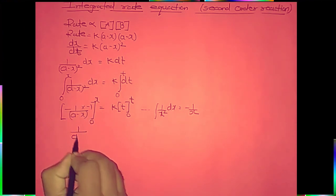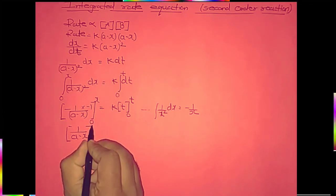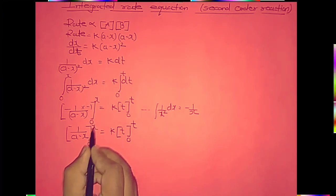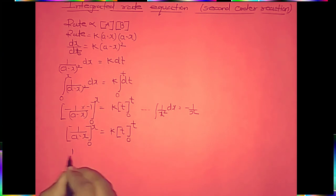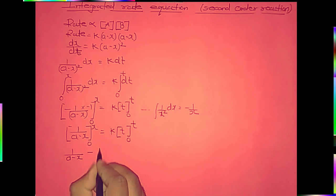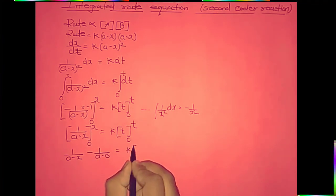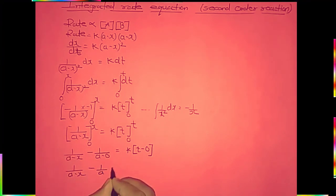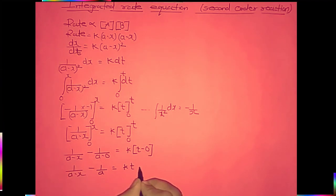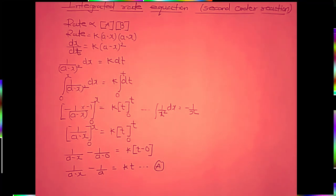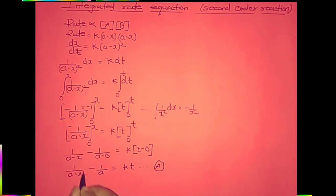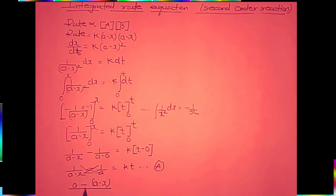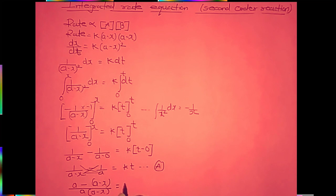The integration of 1/(A minus x)² gives minus 1/(A minus x), with the derivative of minus x giving a factor of minus 1. Applying the limits 0 to x on the left and 0 to t on the right: the double negative gives plus 1/(A minus x), evaluated from 0 to x. Substituting the upper and lower limits: 1/(A minus x) minus 1/A equals kt. Equalizing the denominators gives A minus (A minus x), all over A(A minus x), equals kt.